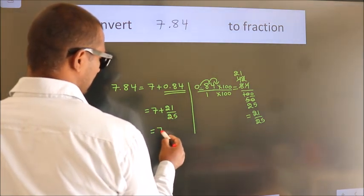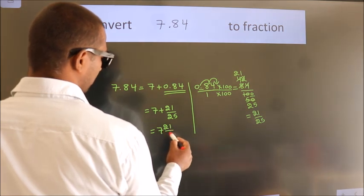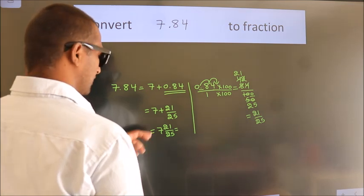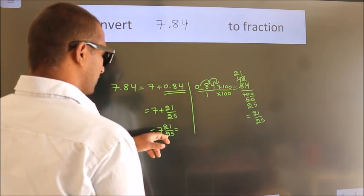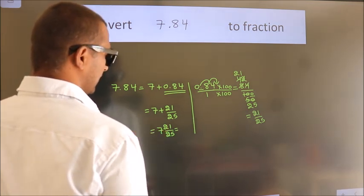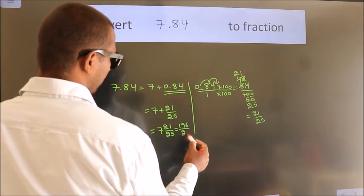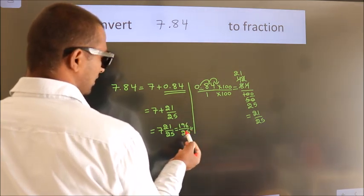In improper fraction it is 7 into 25. 7 into 25 is 175 plus 21. 196 by 25 is our fraction.